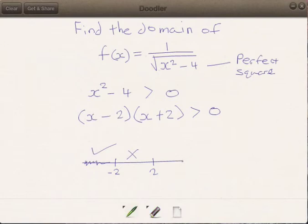Alright, one more region to test, and that would be values greater than 2. So if I plug in a value that is greater than 2, let's say 3, 3 minus 2 is 1, 3 plus 2 is 5, 5 times 1 is 5, and that is greater than 0. Therefore, this region here is also satisfied.